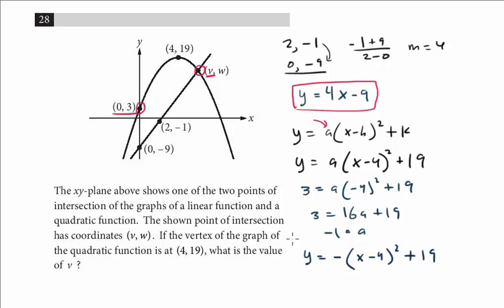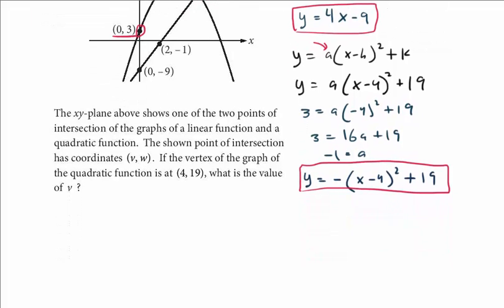So there are lots of steps for this problem. I'm going to write both equations down here. The line, remember they're both equal to y, so the line is 4x - 9 equals the quadratic, which is -(x - 4)² + 19.